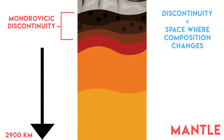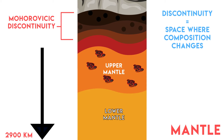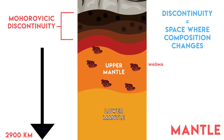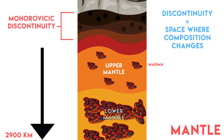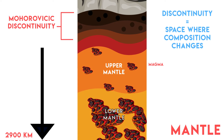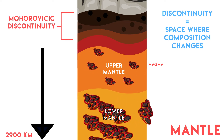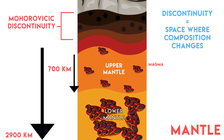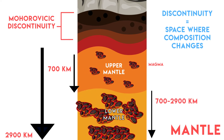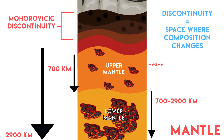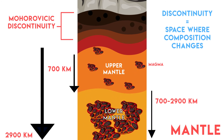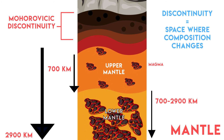Mantle is divided into upper and lower mantle. Upper mantle is made of liquid rock called magma. With depth, pressure increases and magma becomes thick, so lower mantle has viscous magma. Upper mantle extends down till 700 km and lower mantle extends from 700 to 2900 km. Lower mantle has higher density compared to upper mantle and thus it is found below.